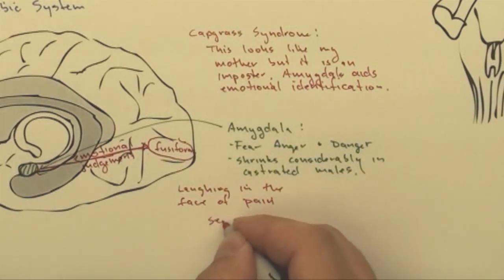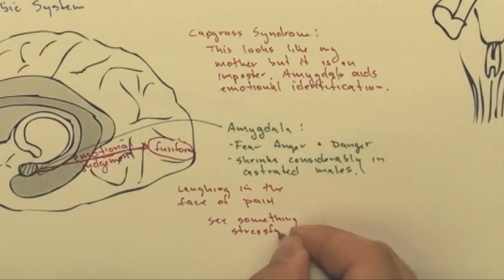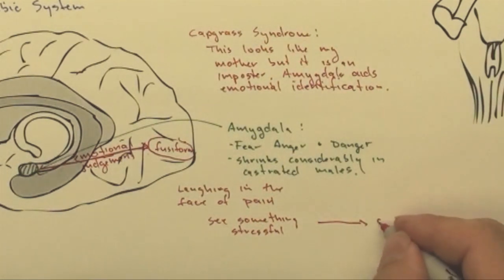And so the idea is you see something stressful. And some part of your brain has to make a judgment about, is this really an emergency or not? So the amygdala decides, is this an emergency?